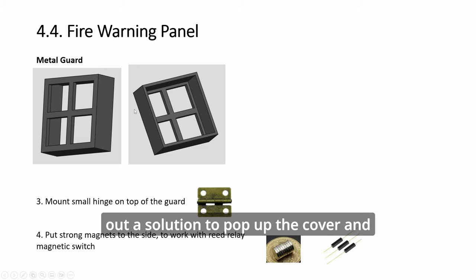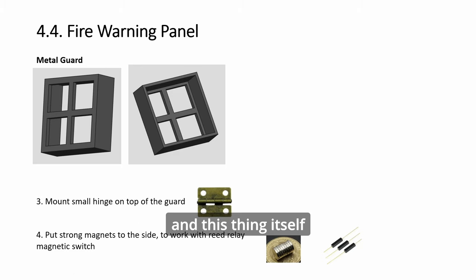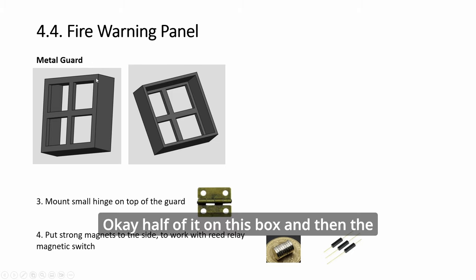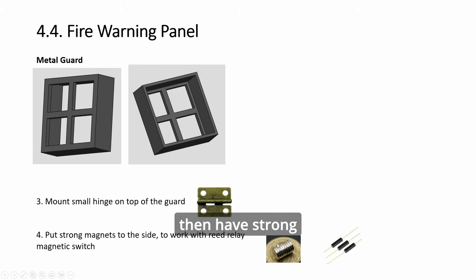It took me a while to figure out a solution to pop up the cover, and it turns out that the simplest solution is the best. Once again, so you just have a door hinge like the way we did for the engine panel, and this thing itself you just stick it on top. Half of it on this box and then the other half on the panel, and you can put screws or hot glue it. Then have strong magnets and this reed switch and pin everything. You'll not be obvious at all.